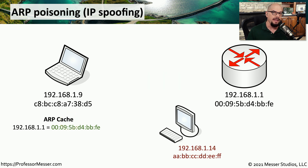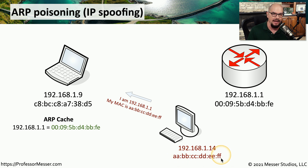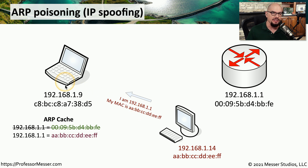An attacker can take advantage of ARP spoofing by sending that ARP response again — but instead of sending it with the attacker's IP address, the attacker sends it by spoofing the IP address of the router. Although the router's IP address is spoofed, the MAC address being sent matches the MAC address of the attacker's workstation. The device receiving that spoofed response doesn't realize it's been spoofed — it simply assumes the MAC address has changed for that IP address, removes the original cache entry, and replaces it with the spoofed information.